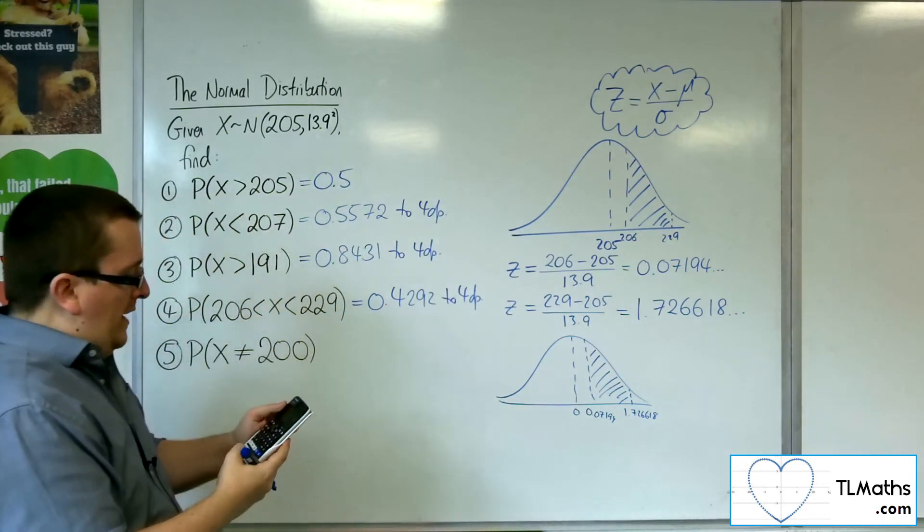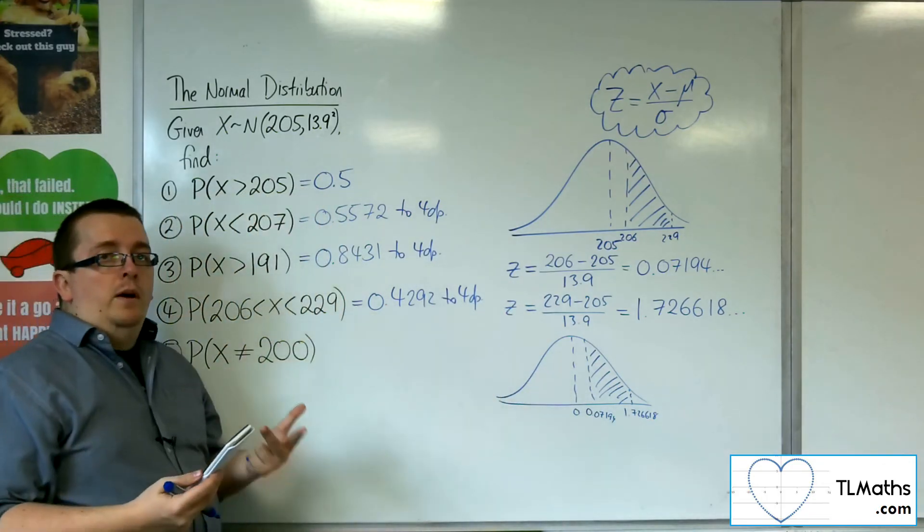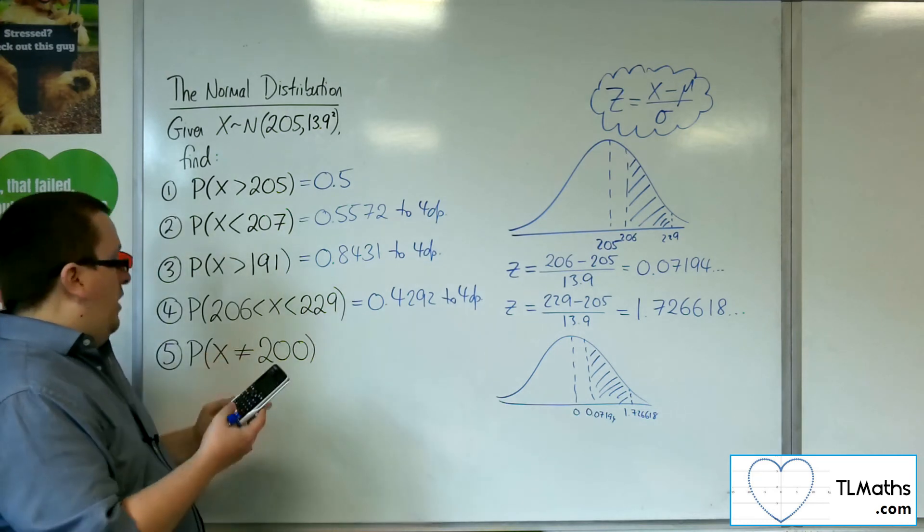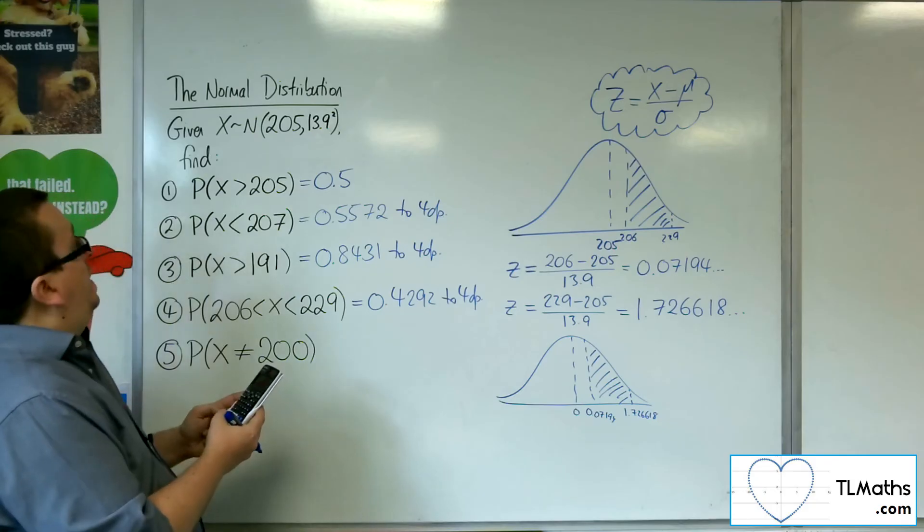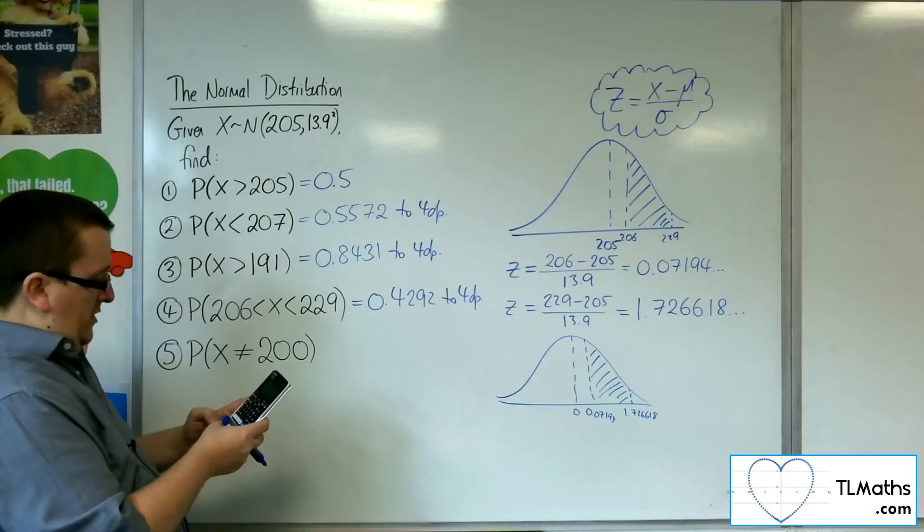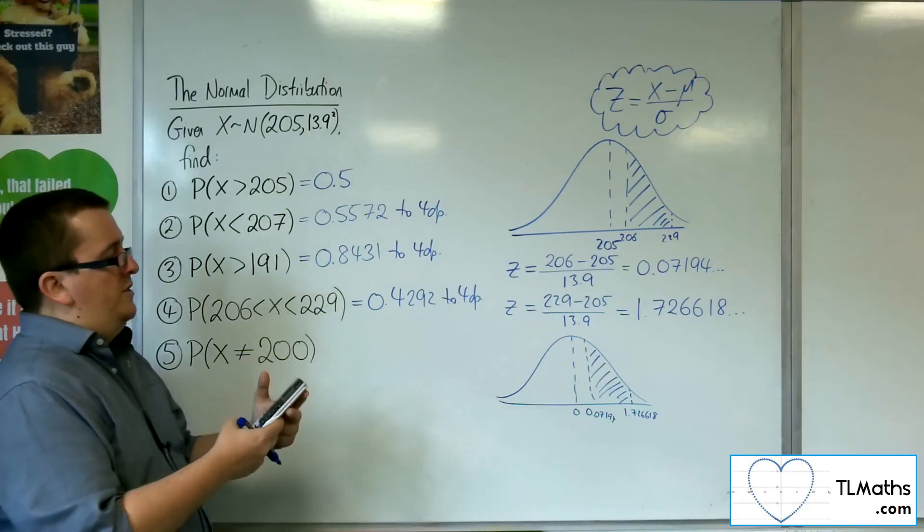If we go with that straight off the bat, this one's easy because we don't have to think up an extra lower upper. We can just type it in directly. 206, 229, sigma is 13.9, and the mean is 205. And we get the 0.4292.